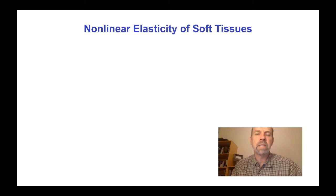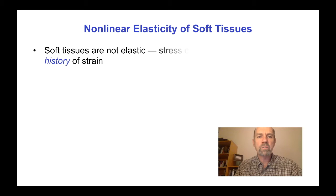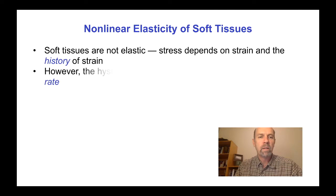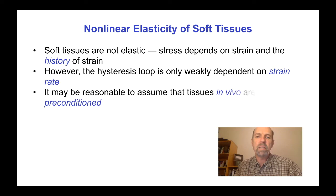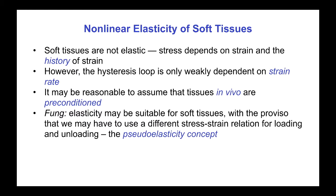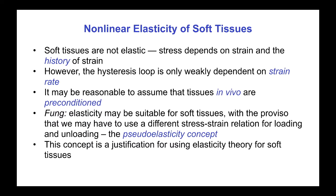Welcome back. Today we will introduce the theory of non-linear elasticity that we will need for soft tissues. We know that soft tissues are not elastic — stress depends on strain, but also on the history of strain. However, the hysteresis loop is only weakly dependent on strain rate, and it may be reasonable to assume that tissues in vivo are already preconditioned. Therefore, Fung theorized that elasticity may be suitable for soft tissues, with the proviso that we may have to use a different stress-strain curve for the loading and unloading portions. This is known as the pseudo-elasticity concept — really a justification for using elasticity theory for soft tissues.